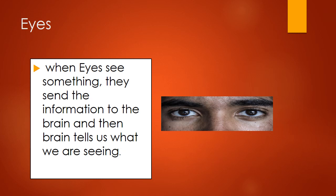The first sense organ is the eyes. When you see something, the eyes send the information to the brain, and the brain tells you what you are seeing. Right now you are watching the screen of the computer — your eyes are sending this information to the brain, and the brain tells you that you are watching the computer screen.